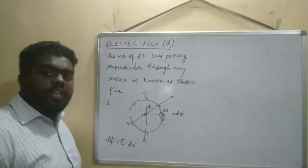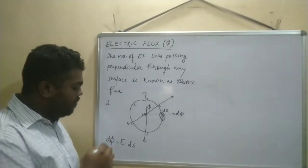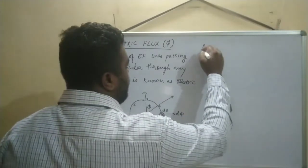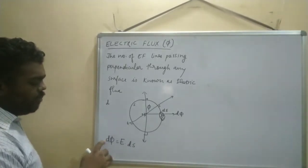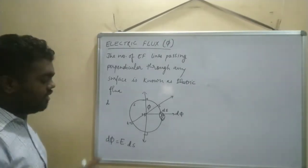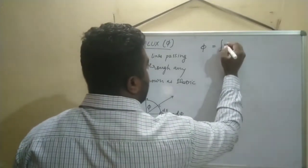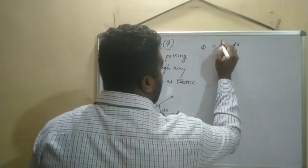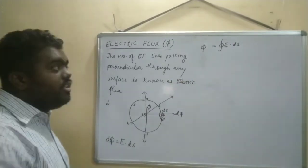When we calculate the value of dΦ, it comes out to be dΦ = E · dS. Now when we need to remove the 'd' sign, we integrate it. When integration and differentiation are applied together, they cancel each other, leaving Φ. So Φ is equal to the closed surface integral of E · dS — remember this is a dot product.